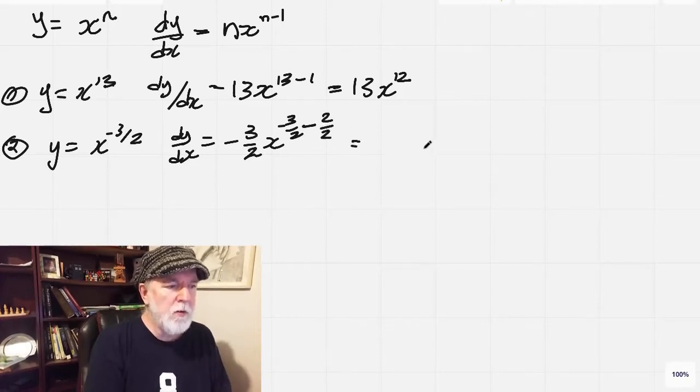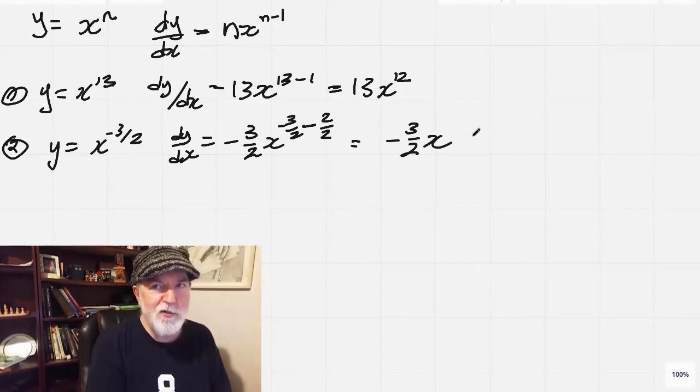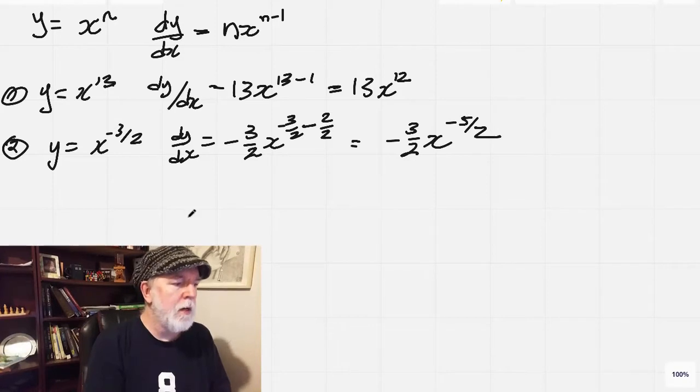Now that all equals negative 3 halves, x to the power of negative 3 minus 2, negative 5, negative 5 halves. Okay.